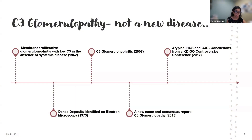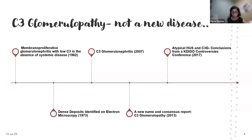It used to be called MPGN with low C3 in the absence of systemic disease. Then dense deposits were identified on electron microscopy in 1973. There was an entity called C3 glomerulonephritis in 2007. Finally, in 2013, there was a new name and a consensus report — it's been over 10 years since the name C3 glomerulopathy was coined.